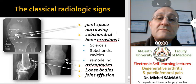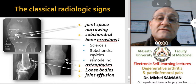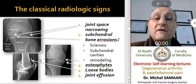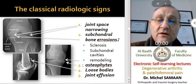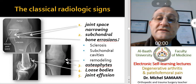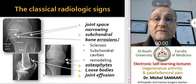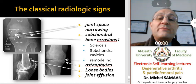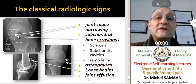Then we have erosions and bone remodeling sclerosis, and the formation of subchondral cavities. Later on, we can see remodeling of the surfaces, osteophyte formation caused by activation of osteoblasts in the subchondral bone, and the formation of loose bodies. Sometimes loose bodies swim in the articular fluid and may cause locking of joint mobility. Because of the synovitis, we can see joint fusion in many cases of degenerative osteoarthritis.